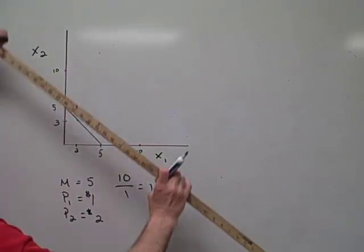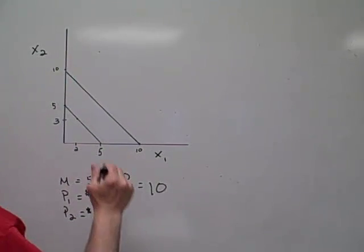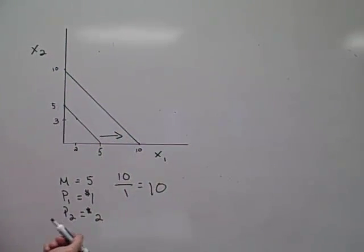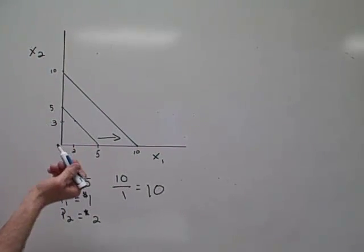So if I now move their budget constraint curve to the right, you can see that they are now able to afford more of X1 and more of X2.